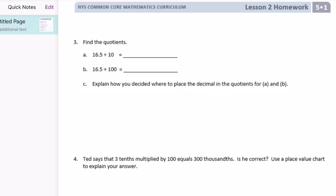Find the quotient. 16.5 divided by 10. We're going to move the decimal point one place to the left. We end up with 1.65. Divided by 100. Move it two places this time. One, two. We end up with 0.165. Explain how you decided where the decimal in the quotients for A and B. For A, we needed to shift the digits one place to the right, or move the decimal place one place to the left, because we were dividing by 10, 10 to the first power. In part B, we just needed to shift the decimal point two places to the right, because we have 100, which is 10 to the second power, or we move the decimal point two places to the left.